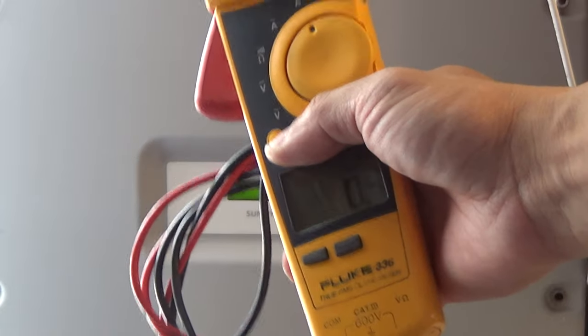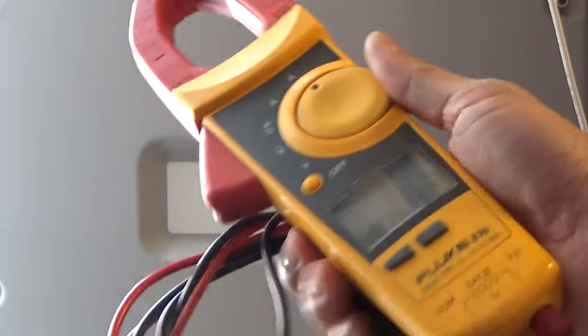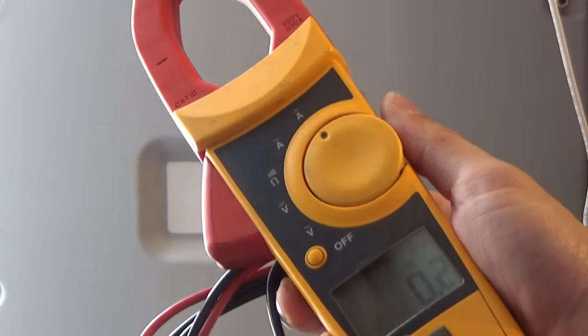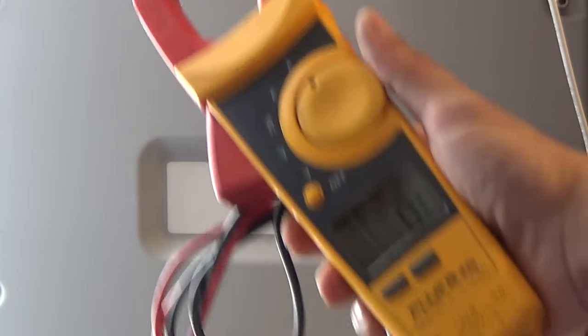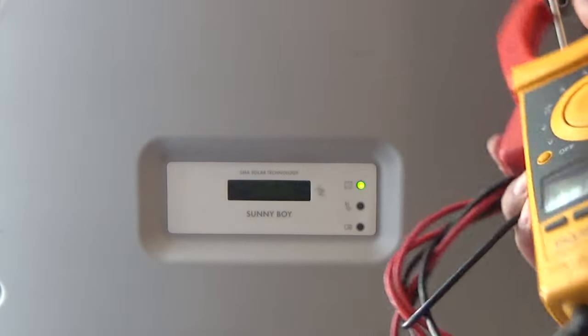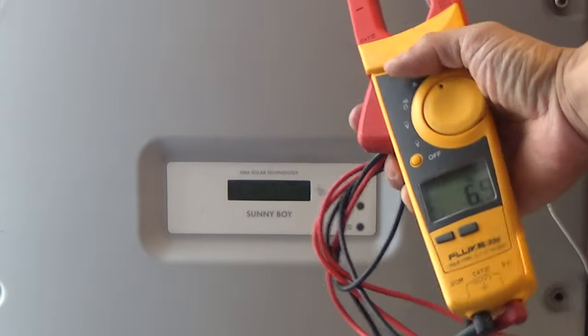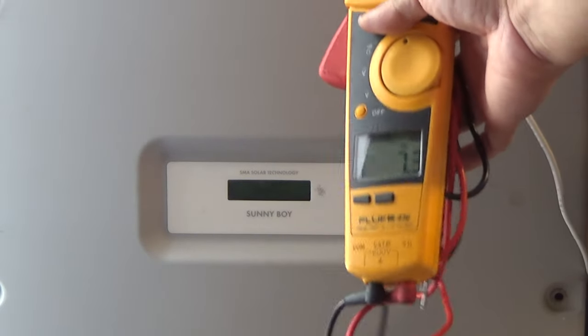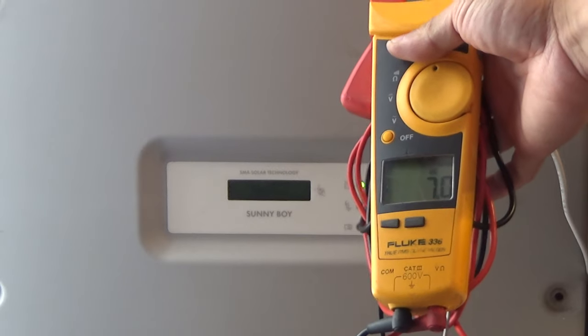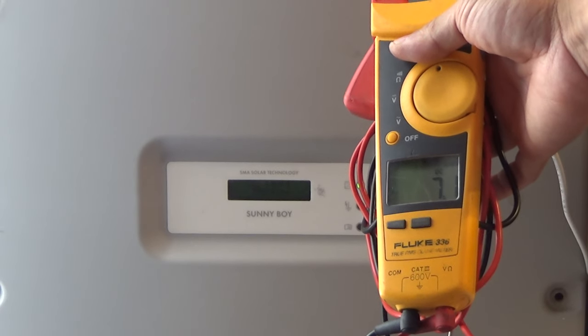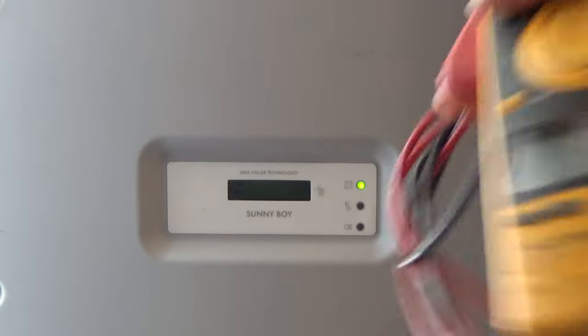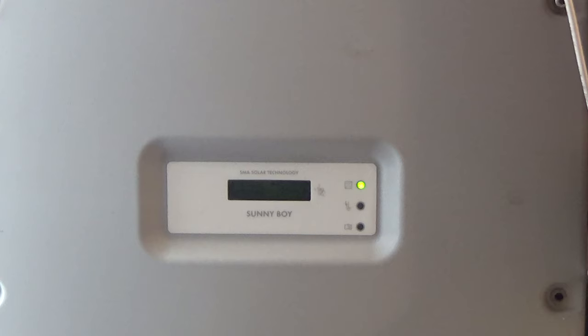This is the Fluke 336. See how accurate that is. And I got it to amp DC. Let me zero it. Okay. Zero. 6.9 or 7. So that is pretty much the same as the other one. So around 7 amp average. Alright. So let's do the math to see if these clamp meters are accurate.